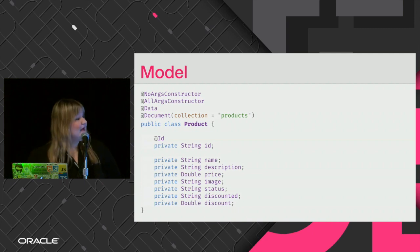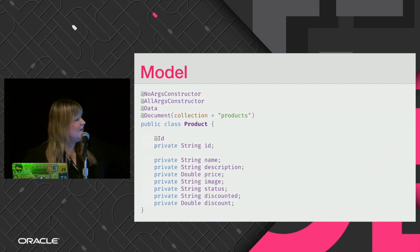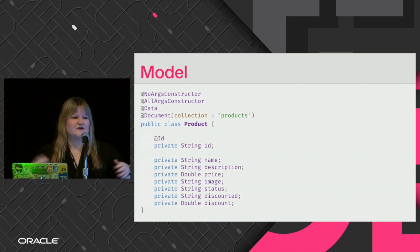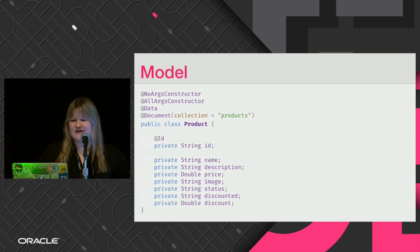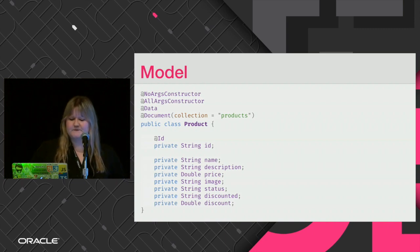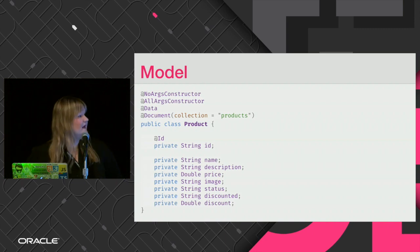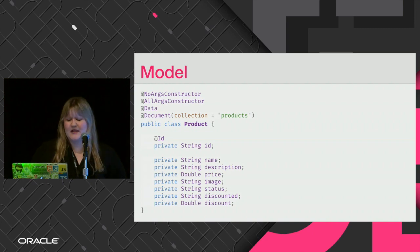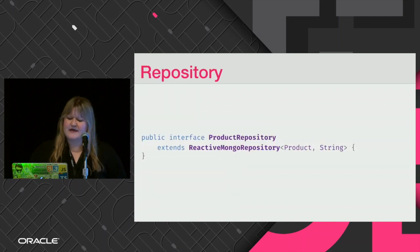We have all the annotations to generate the constructors with arguments, no arguments, getters, setters, toString — all that boilerplate that we usually ask the IDE to generate. But we can do that with annotations using Lombok. Then we have all the properties in our collection, which is products.